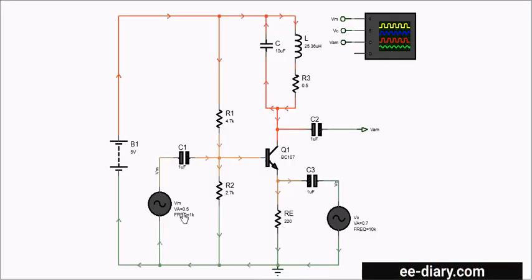The message signal, labeled Vm, of 0.5 volts at 1 kHz, is AC coupled via capacitor C1 into the transistor's base.